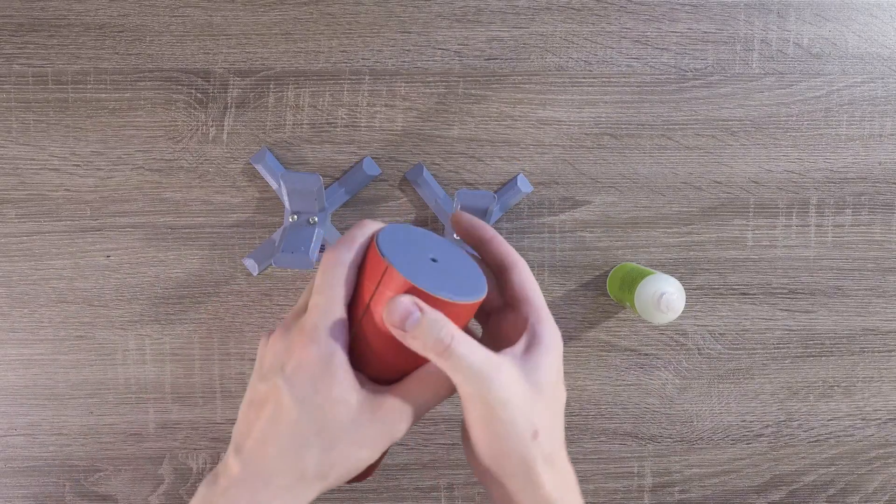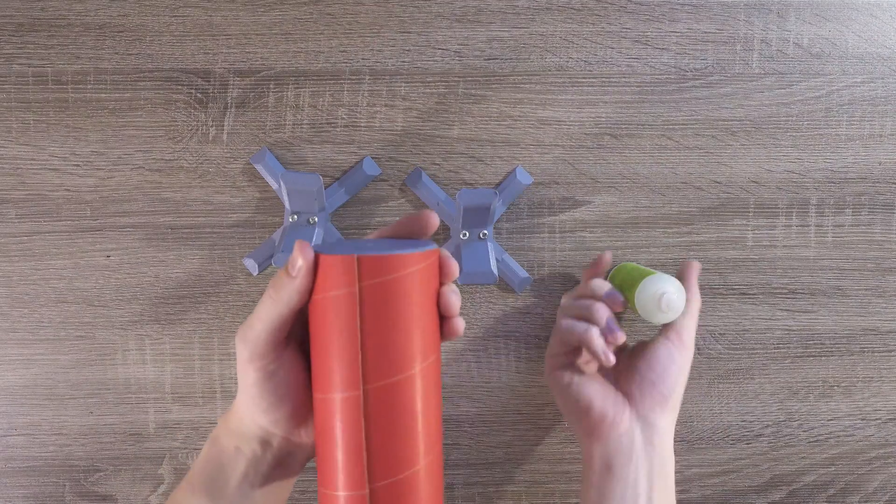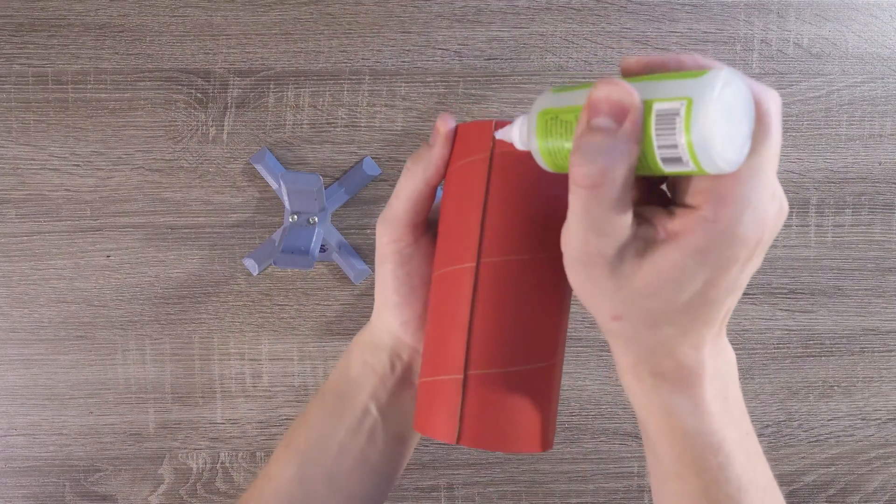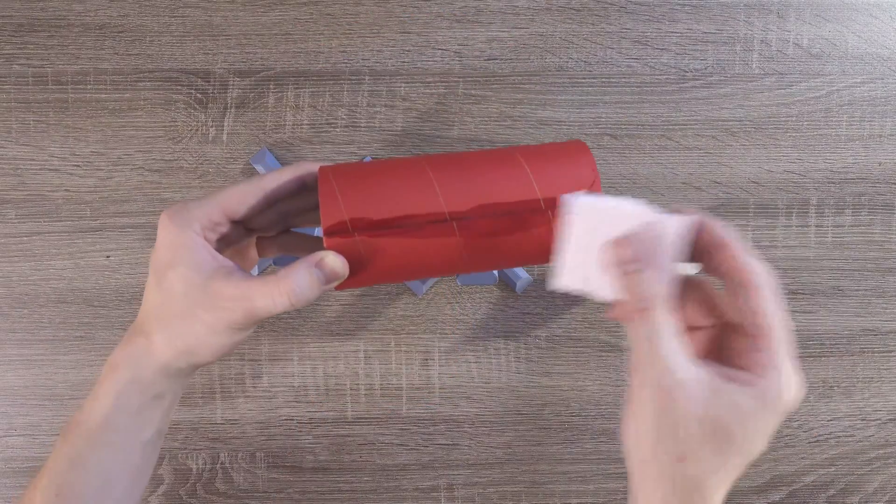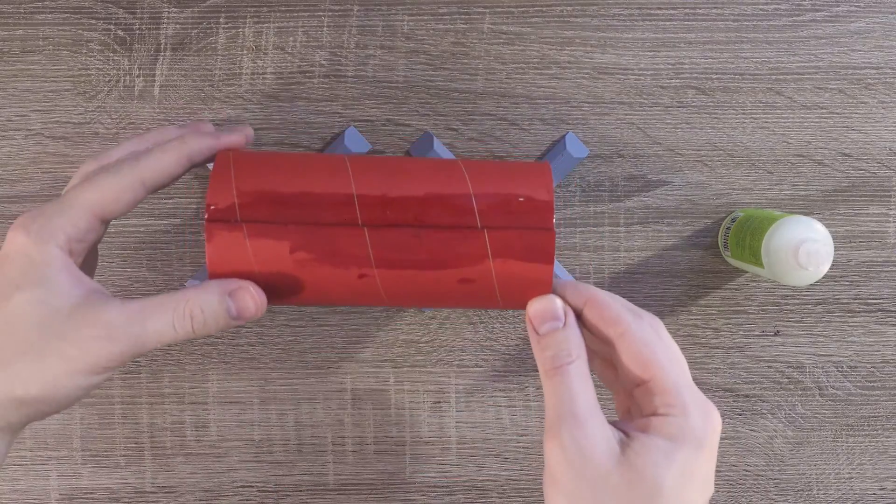But before we can attach the piston bulkhead, we need to lock down the diameter of the piston itself. I'll do this again with the same superglue from before. Once done, I'll wipe away some excess glue, and then set it down to let it dry.